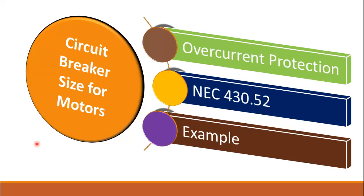In my previous video I explained how to size the circuit breaker for branch circuits that include lighting circuits or any resistive loads other than motor loads. For motor loads, we first need to identify the overcurrent protection. After that we will refer to the NEC standard 430.52, which states the circuit breaker protection for motors. Lastly, we'll solve an example to understand the sizing of circuit breakers for motor circuits.